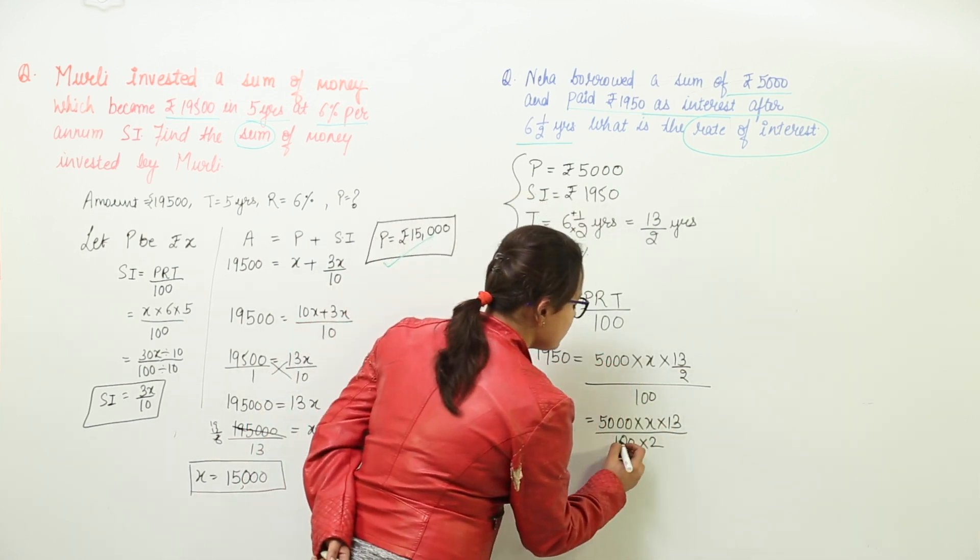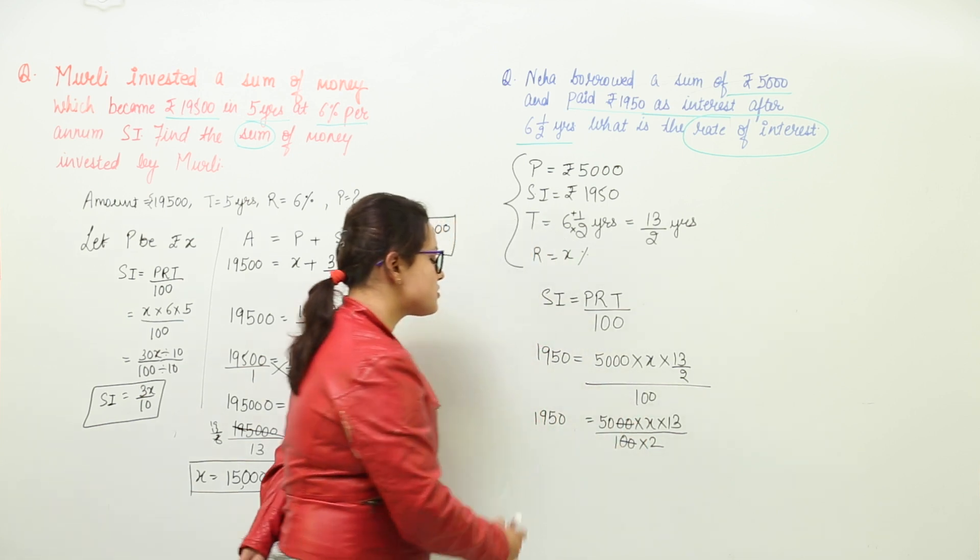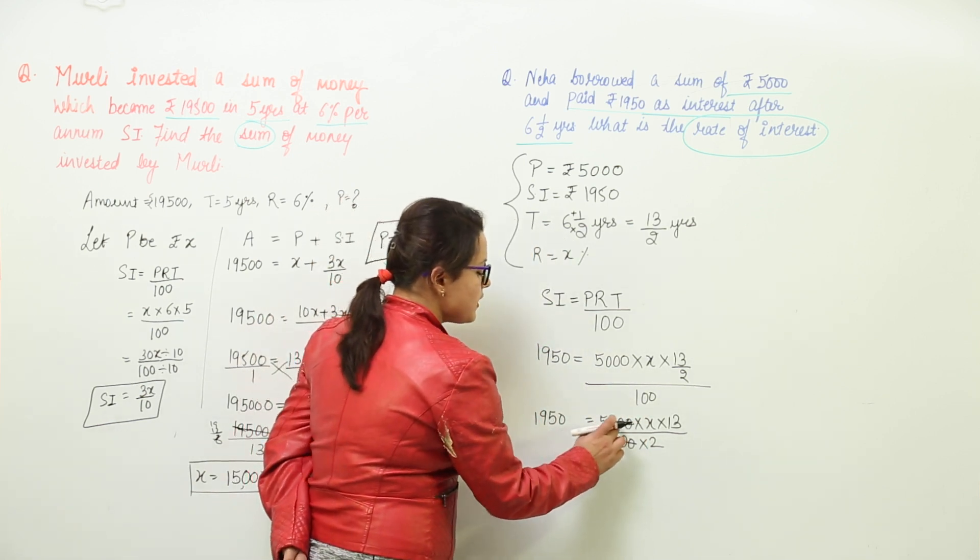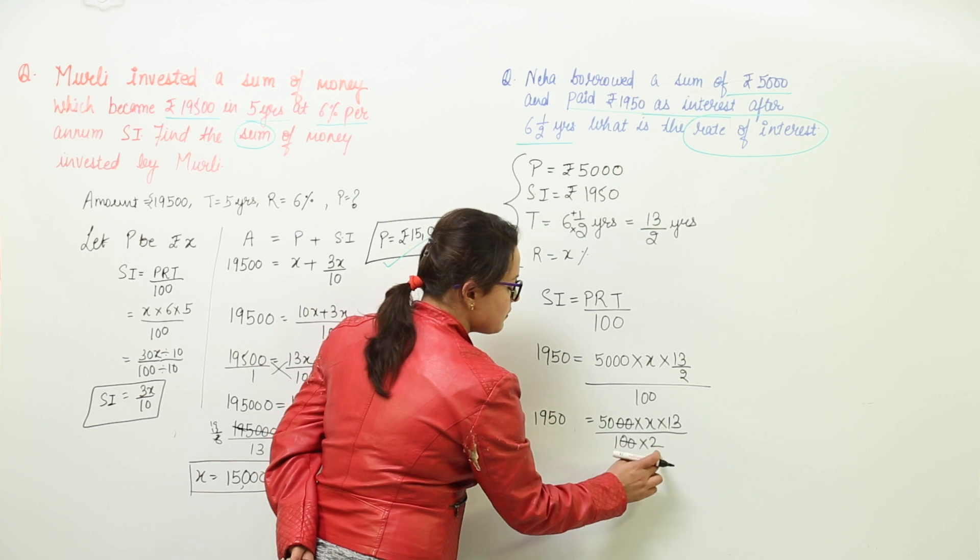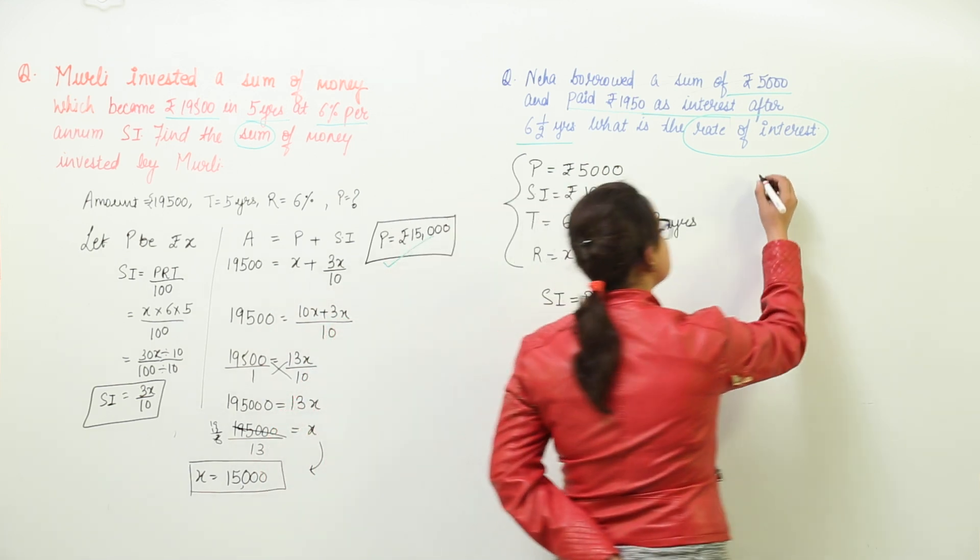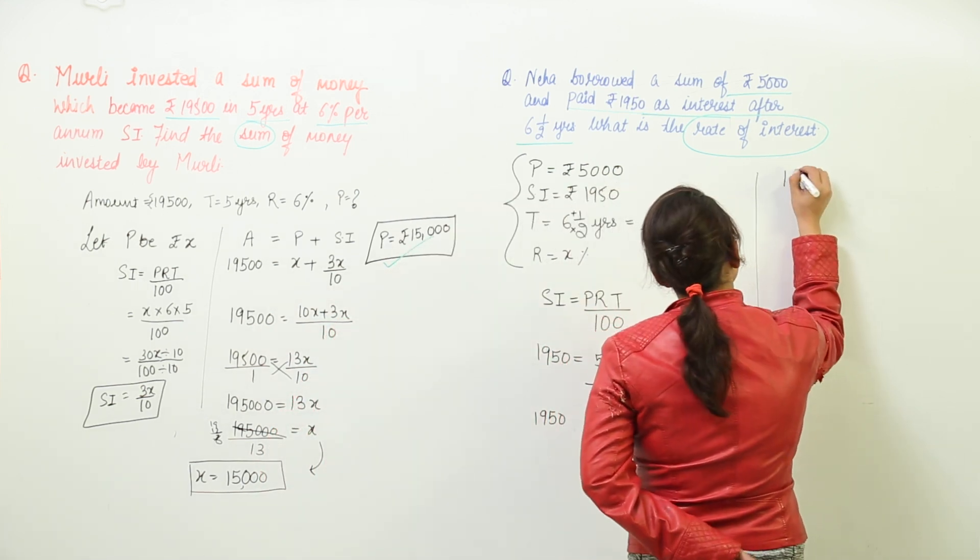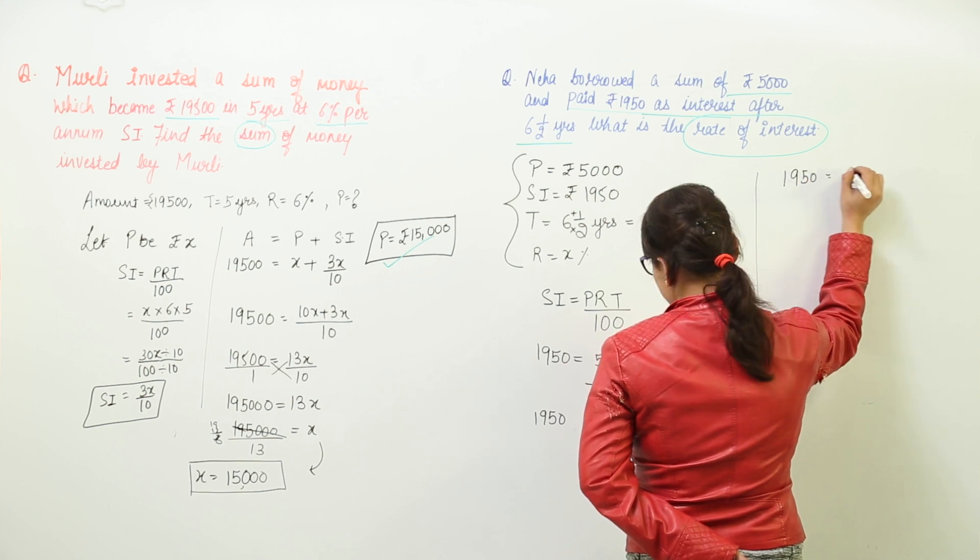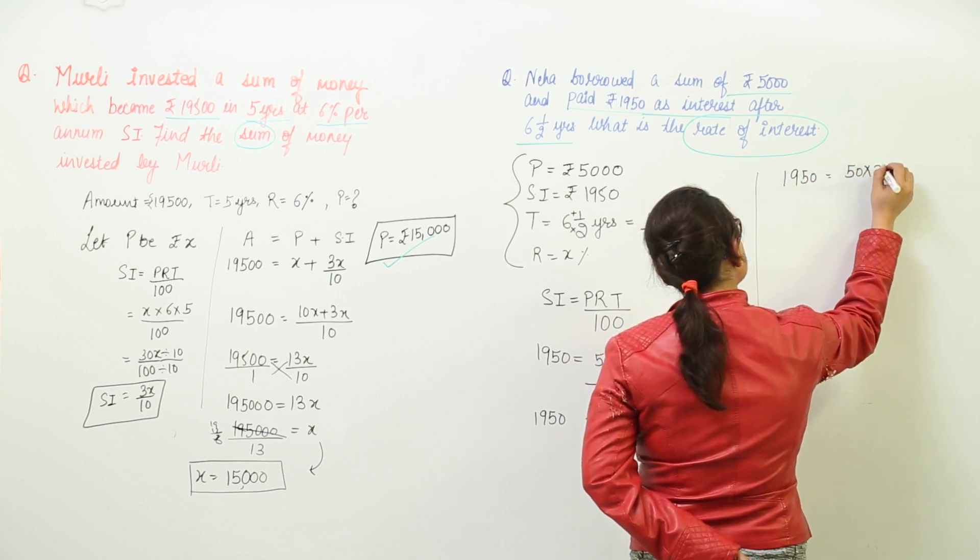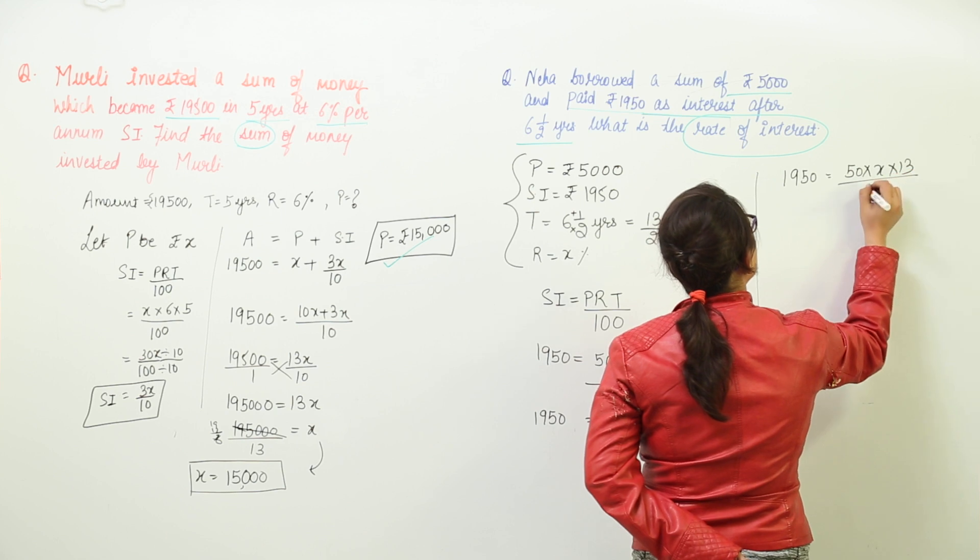So before moving on we can simplify it here also. That is now you get 50 into X into 13 upon 2. Let us continue further. We get 1950 equal to 50 into X into 13 whole divided with 2.